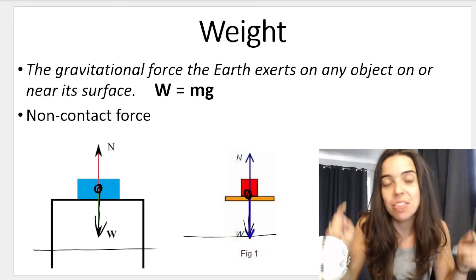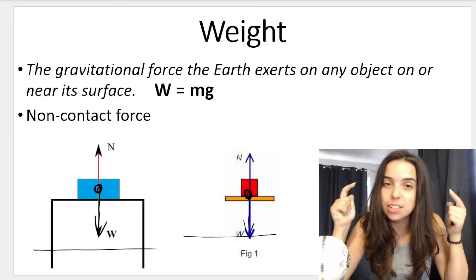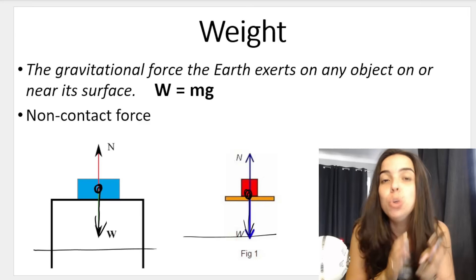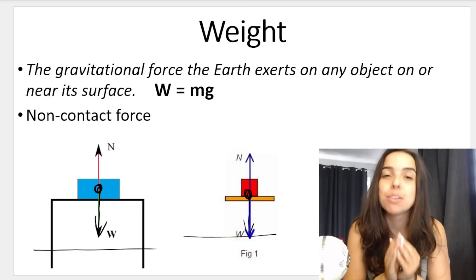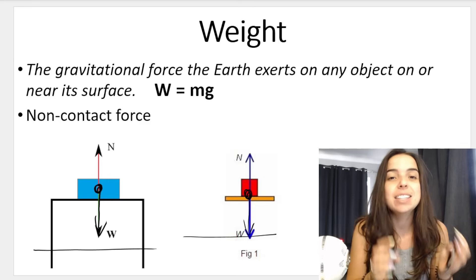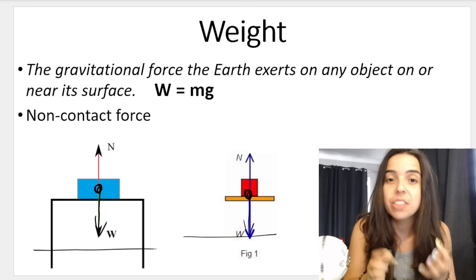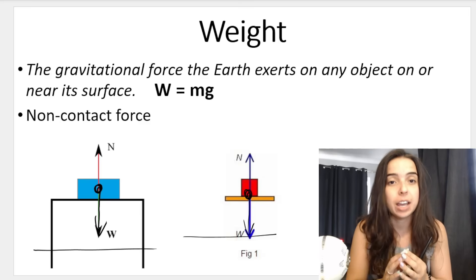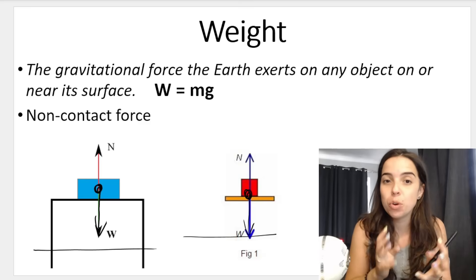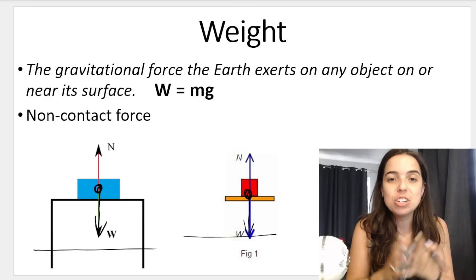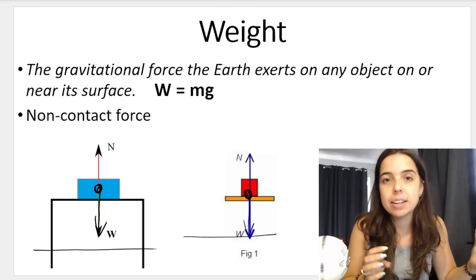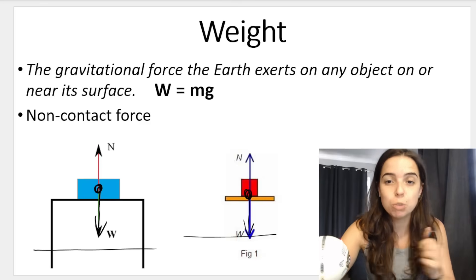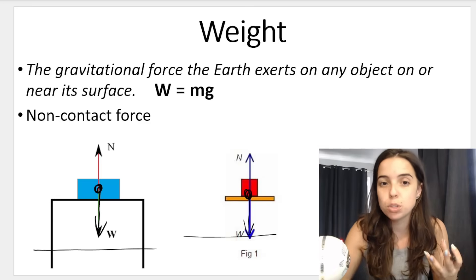Take a look at the italicized definition on the screen — that is your formal, official definition for weight. You are expected to know that in Grade 11 and Grade 12. It says that weight is the gravitational force that the earth exerts on any object on or near its surface. This is a non-contact force, which means the two surfaces don't need to be in contact for that force to be experienced.